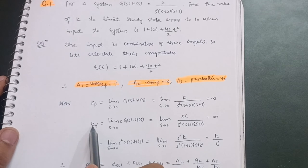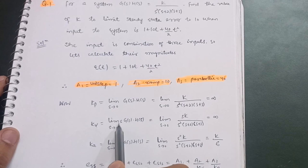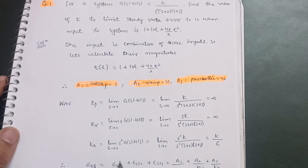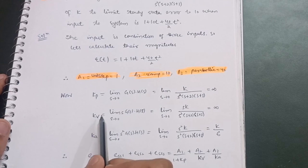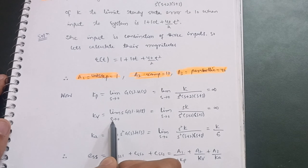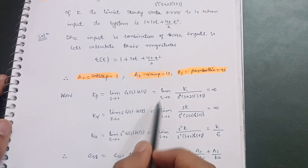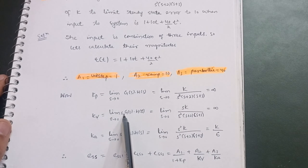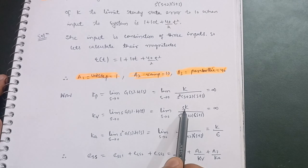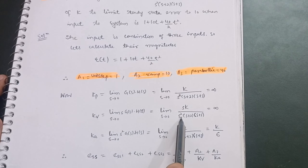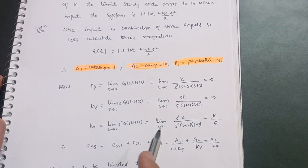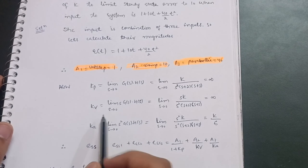The velocity error constant: Kv = lim(s→0) s·G(s)H(s) = lim(s→0) s · k / [s²(s+2)(s+3)]. Putting s = 0 gives 0·k divided by 0, which is still infinity. So Kv = ∞. Anything divided by 0 is always infinity.